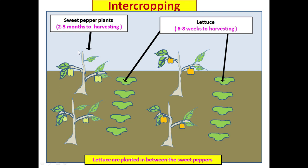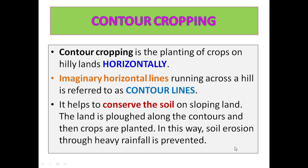The diagram demonstrates intercropping. Sweet pepper plants take two to three months from planting to harvesting and are planted at a distance, leaving spaces between them. Those spaces are used to plant lettuce instead of leaving the land with weeds. With this method, plants are planted in between each other and the soil is used up as much as possible.